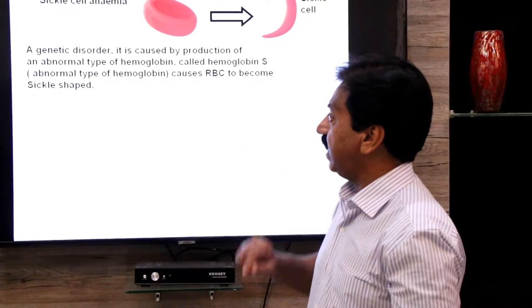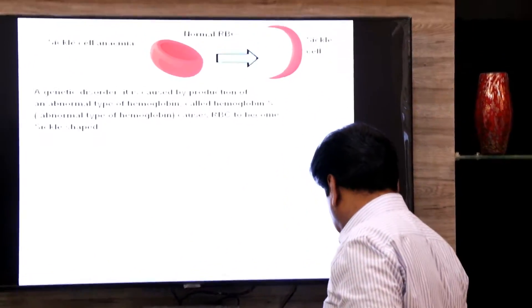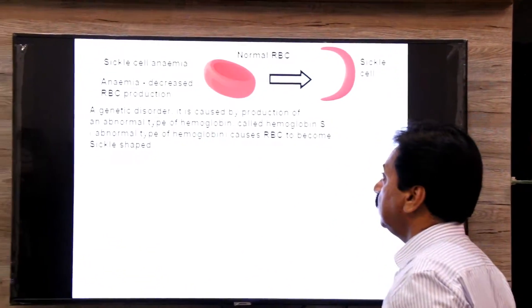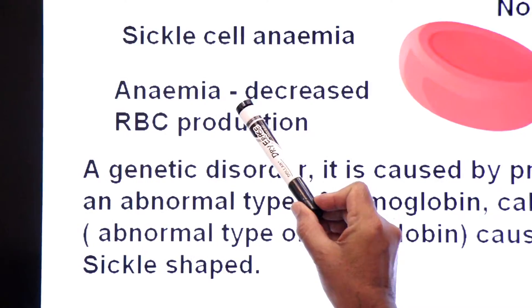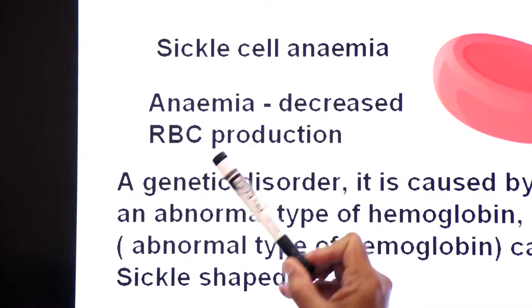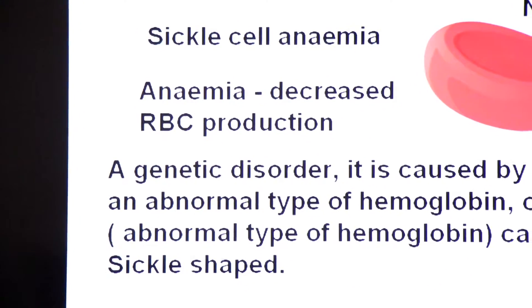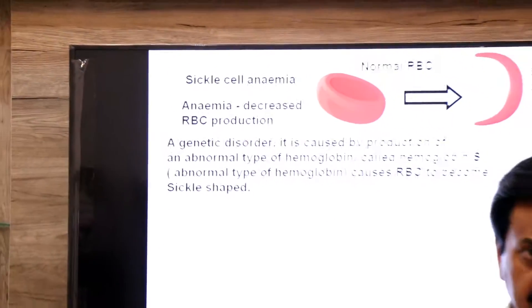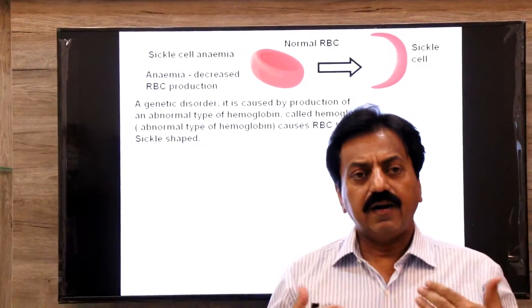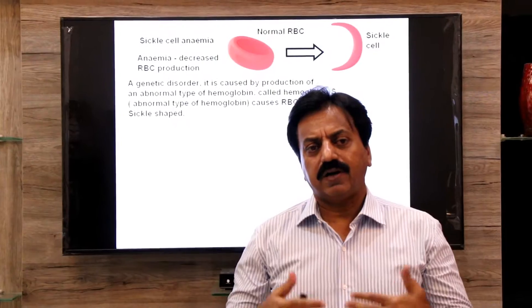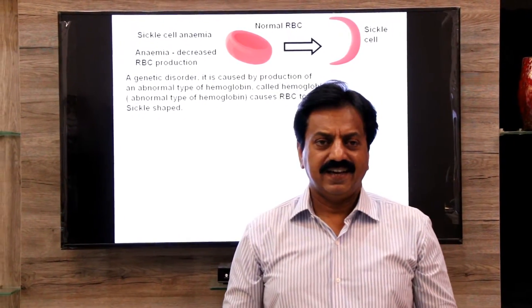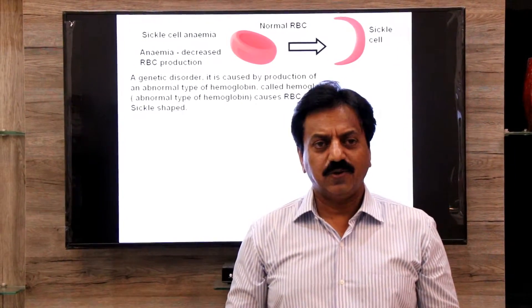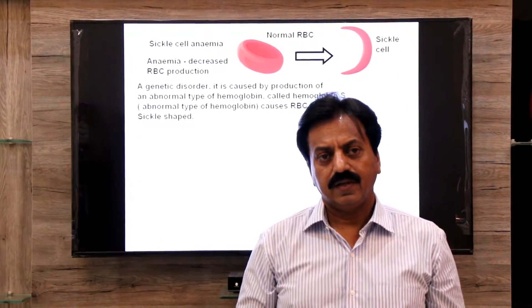Anemia — what is anemia? It refers to decreased RBC production. When RBC production decreases, this condition is called anemia.